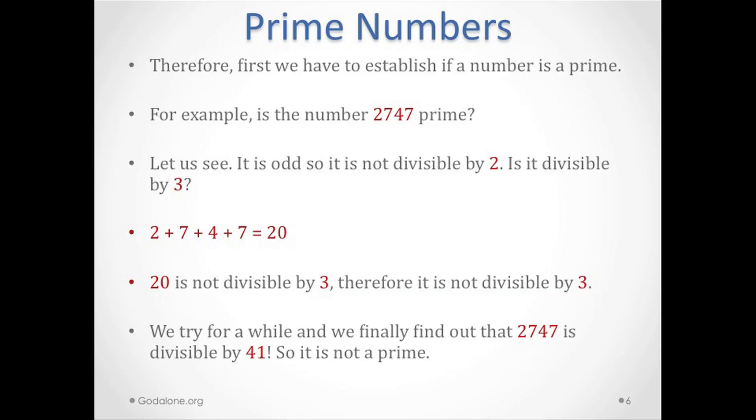First we have to establish if the number is prime. I'm going to take a very small number, 2747, which is a very small number. Let us see if this is prime or not. It's not an even number, so it cannot be divisible by two. We go to the next point and see if it's divisible by three. A number is divisible by three if the sum of its digits is divisible by three. So we add them up: 2 + 7 + 4 + 7 = 20. Twenty is not divisible by three, therefore it is not divisible by three. So we keep trying, we go to the next point which is five.